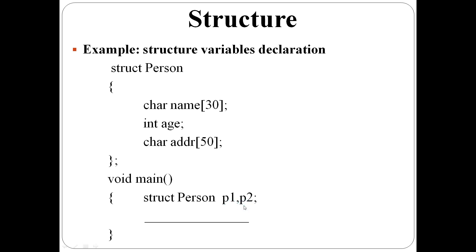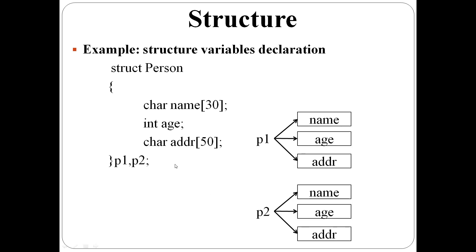When structure variables are declared, p1 will have corresponding separate name, age, address fields. Suppose one character size is one byte, one integer size is two bytes. Then name will have 30 bytes reserved. 30 characters can be placed. So, 30 into 1, 30 bytes for the variable name. Age is integer, so 2 bytes.